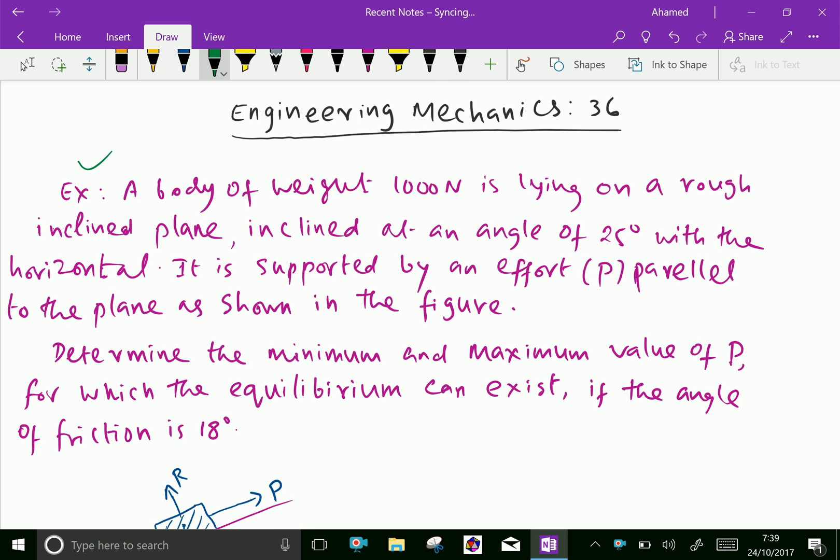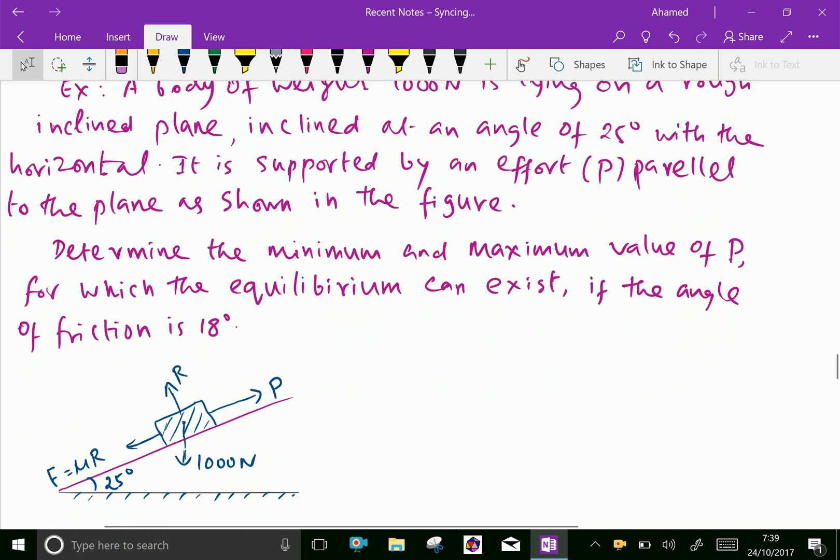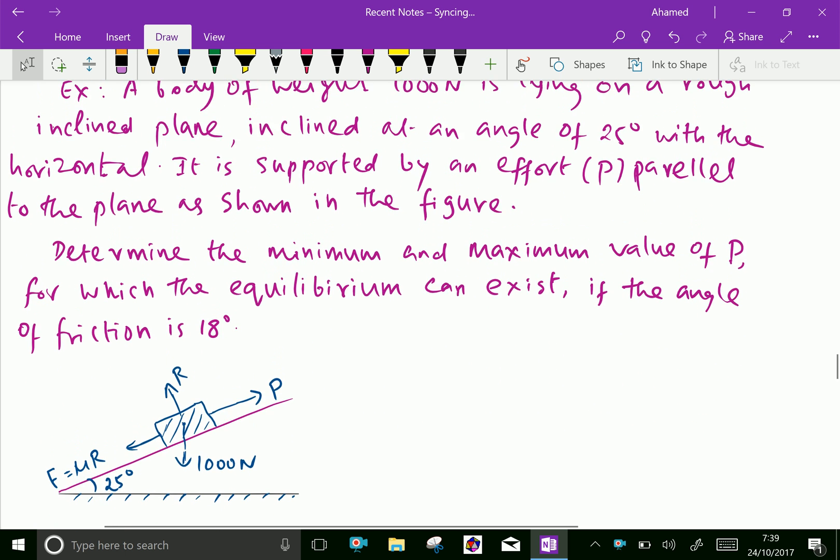Example: A body of weight 1000 Newton is lying on a rough inclined plane, inclined at an angle of 25 degrees with the horizontal. It is supported by an effort P parallel to the plane as shown in the figure. Determine the minimum and maximum value of P for which the equilibrium can exist if the angle of friction is 18 degrees.